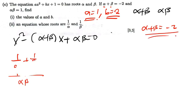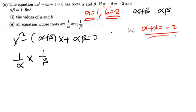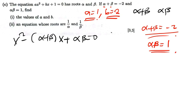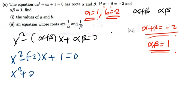For the product, 1 over alpha times 1 over beta equals 1 over (alpha times beta). Since alpha times beta equals 1, the product equals 1. Now plugging into the equation x² − (sum)x + (product) = 0: x² minus (negative 2)x plus 1 equals 0, so x² + 2x + 1 equals 0. That is the equation they wanted us to find.